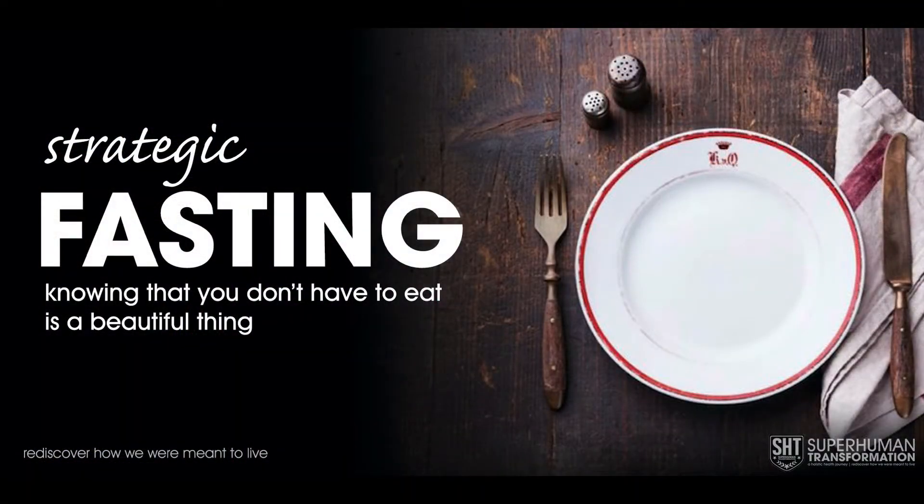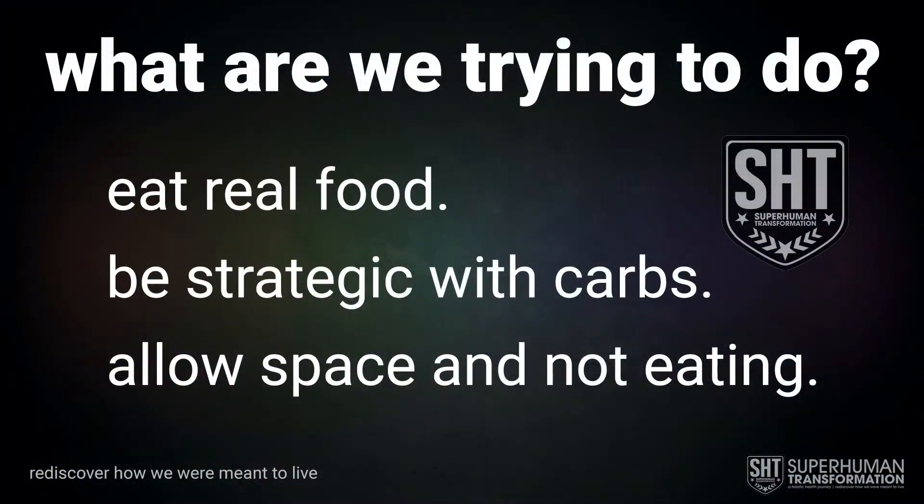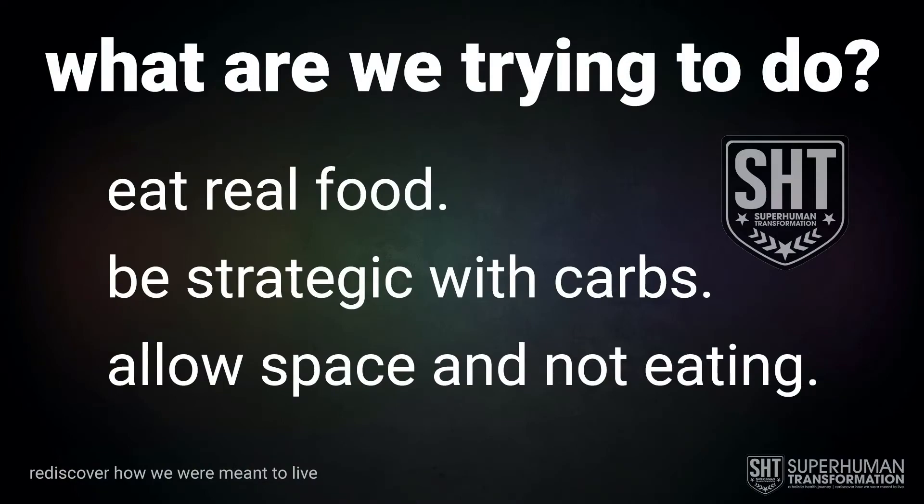To summarize: understanding metabolic efficiency means being strategic with carbohydrates, having rules around them, not consuming carbohydrates all day, and making sure carbohydrates come from real food sources in moderated amounts. We also want to embrace space — periods of no eating — because that's when the magic of fat burning happens. As you get more comfortable, you can experiment with fasting protocols, but just not snacking all the time is already extremely beneficial. Big picture: eat real food, be strategic with carbohydrates, and nurture space.